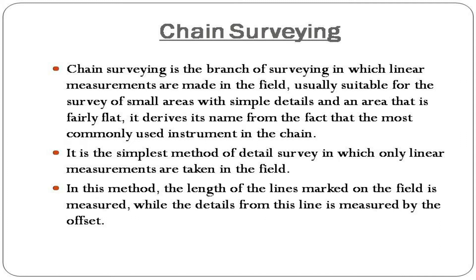Chain surveying is the branch of surveying in which linear measurements are made in the field, usually suitable for the survey of small areas with simple details and an area that is fairly flat. It derives its name from the fact that the most commonly used instrument is the chain. It is the simplest method of detail survey in which only linear measurements are taken in the field. In this method, the length of the lines marked on the field is measured, while the details from this line are measured by the offset.